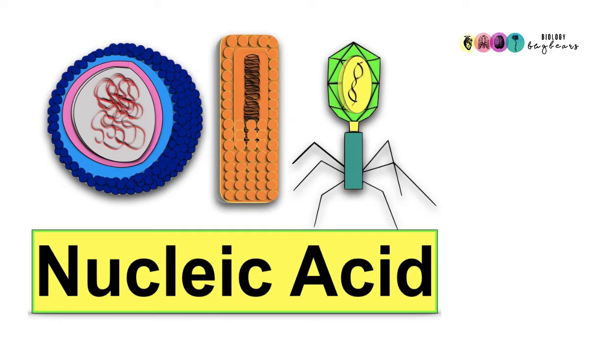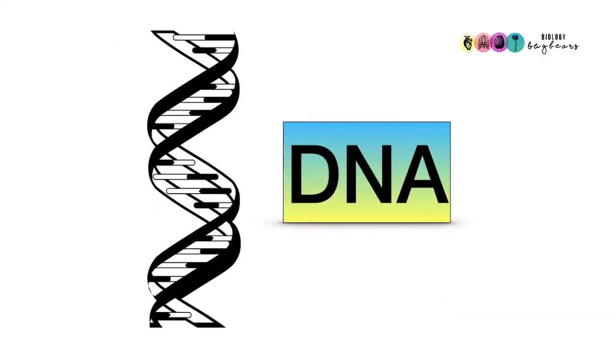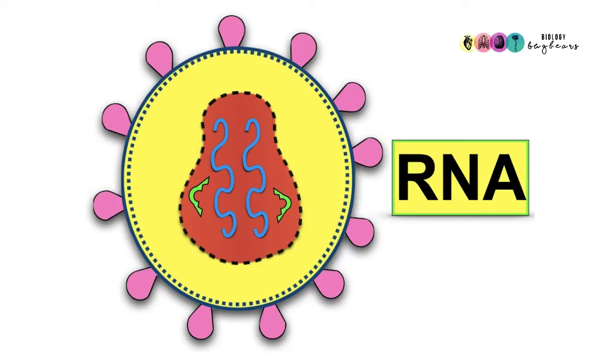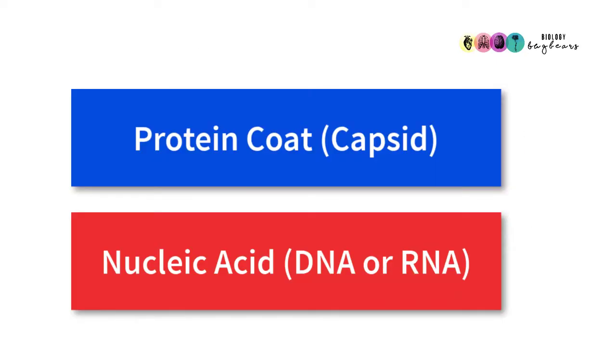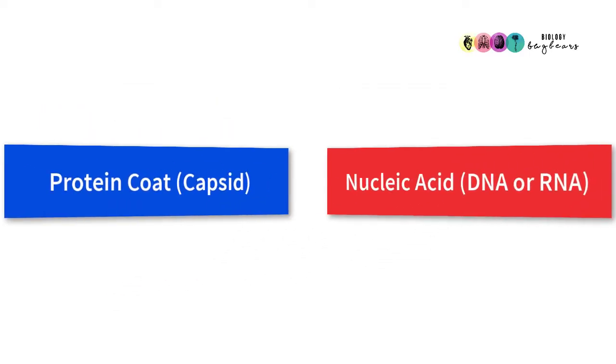The second common structural feature is that all viruses have a nucleic acid—either DNA or RNA. If the virus has RNA, it's known as a retrovirus, and the most famous retrovirus is HIV. So all viruses have a protein coat called a capsid and a nucleic acid, either DNA or RNA.